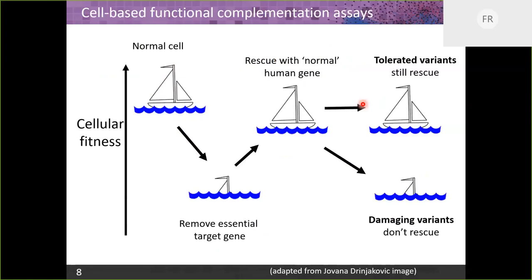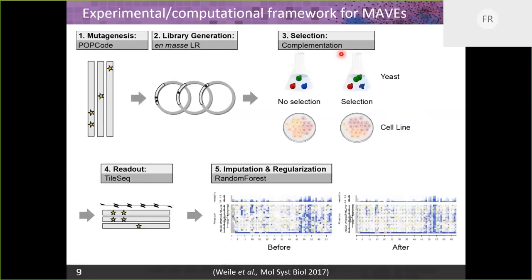The basic idea is you start with a normal cell and you have a phenotype if you knock out the gene of interest — the most convenient one, of course, is cellular fitness. If the loss of fitness can be rescued by bringing back the human gene, then you have an assay. You can put individual variants in and see if the variant clone is able to rescue. If it is still able to rescue, your best guess is that it's tolerated; if it doesn't, your best guess is that the variant is damaging.